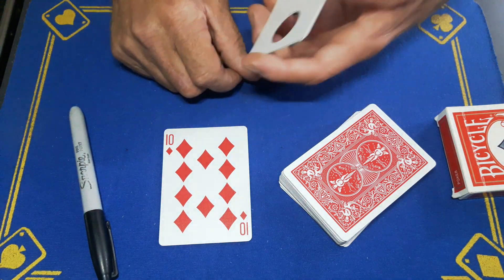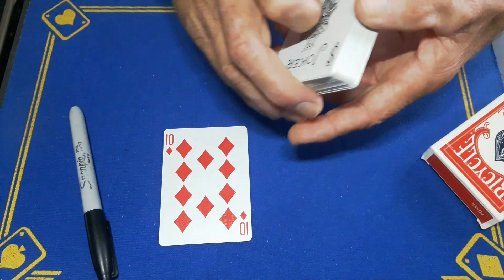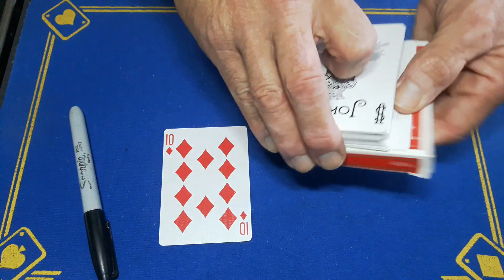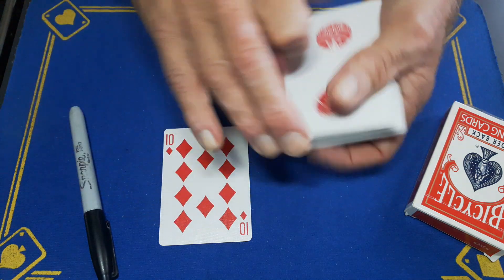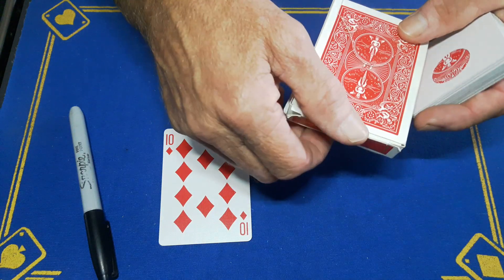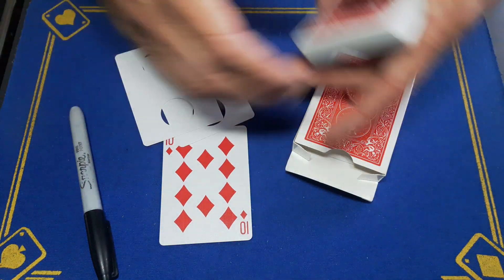Now without even mentioning anything, you're going to drop these on the top and then pick up the box, turn the box over. Or you could pick up the deck beforehand, drop these two on the top, go and pick up the box. As if you're going to open up the box to put the cards in, slide these two off, drop them down.